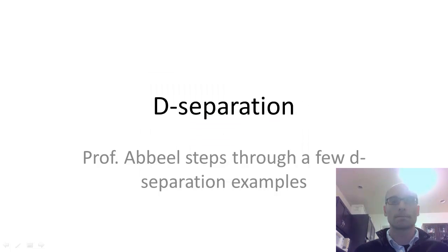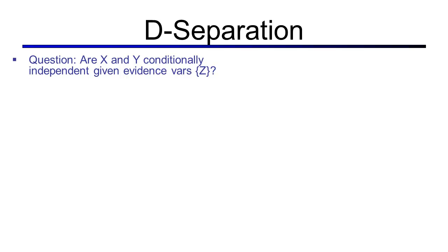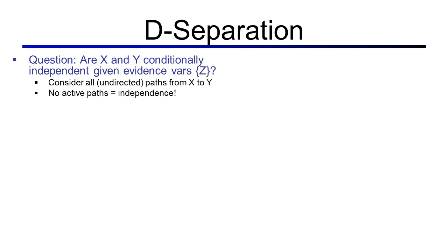D-separation. The type of question we're going to answer is: are two random variables x and y conditionally independent given some evidence variables z? D-separation will allow us to answer these questions by just looking at the graph structure of the Bayes net. To do this, we'll look at all undirected paths from x to y, and if none of these paths is active, then we declare independence.